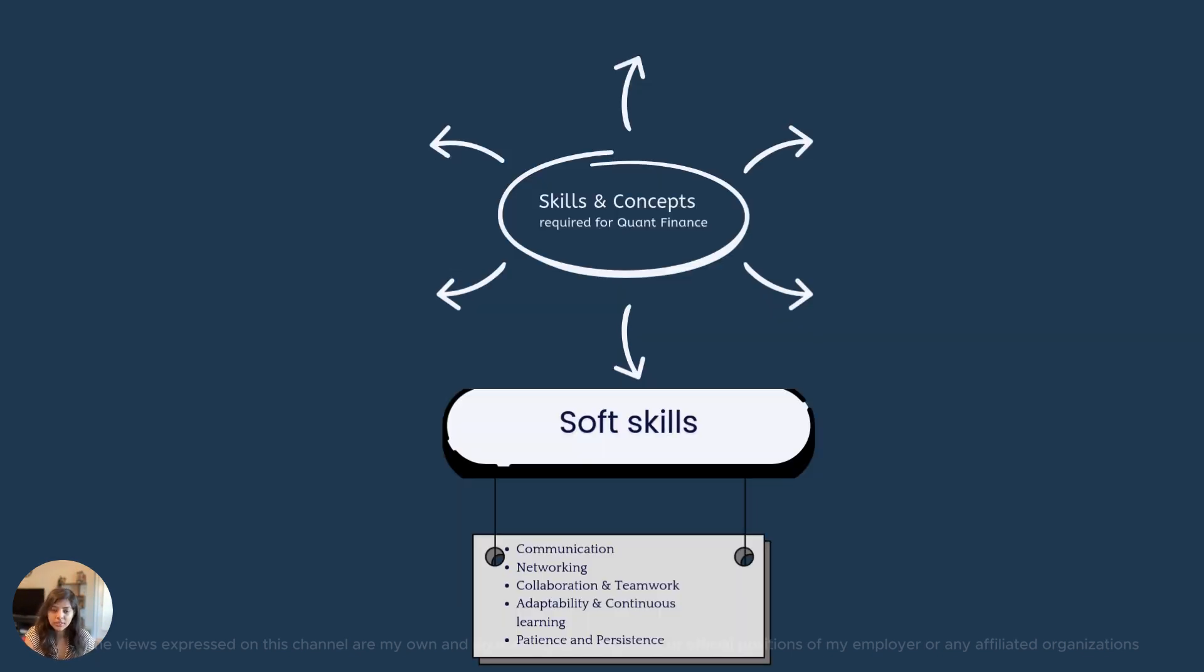Lastly, soft skills. Communication is definitely the number one skill in quant finance because usually quants end up building complex financial models, but they also have to communicate the same complex model to a non-techie or a strategy role. The ability to translate a complex financial model in layman terms is an important skill for a quant to have.